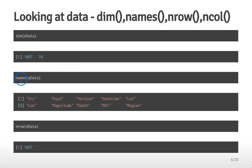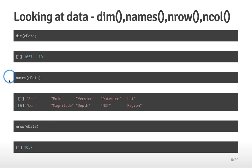You can also look at the names of variables in the data frame by applying names() to edata, which gives you the list of the ten variable names — these should match what you're expecting. You can also look specifically at the number of rows or columns: dim() gives you both (rows first, then columns), or you can get them individually using nrow() or ncol().